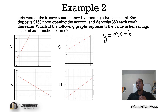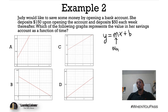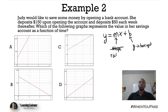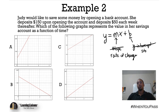Let's review what each component represents: X is your independent variable, Y is your dependent variable because Y depends on X, M is your slope or rate of change, and B is your Y intercept. In real-world problems, we can say 'rate of change' instead of slope, and 'starting value' instead of Y intercept.